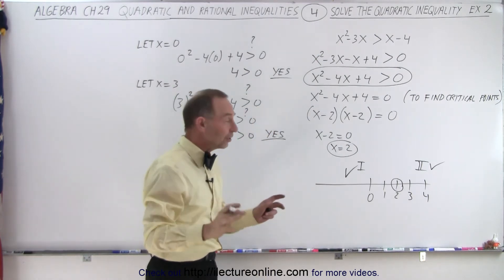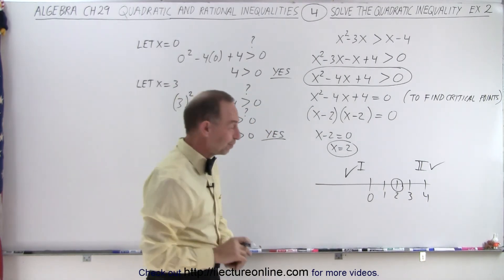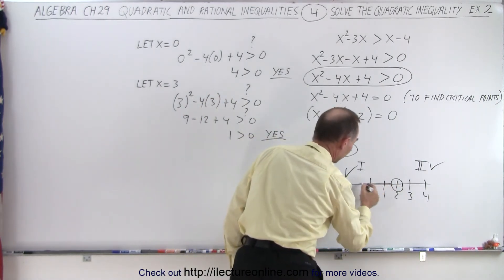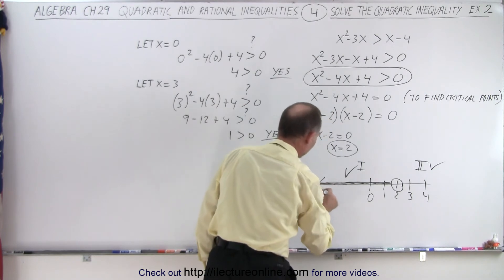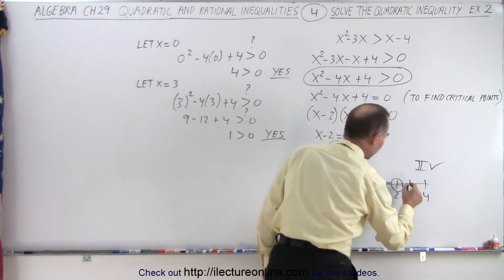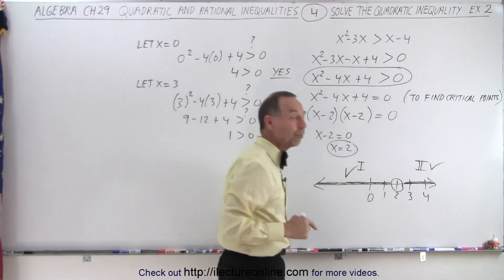So it appears that everything on the number line satisfies inequality except for the number 2. Now we darken the portion of the line that satisfies inequality. So in this case, everything to the left of 2 and everything to the right of 2 but not including the point 2.